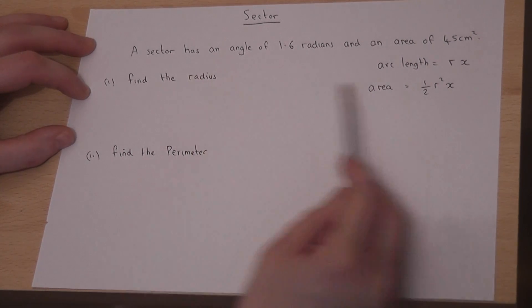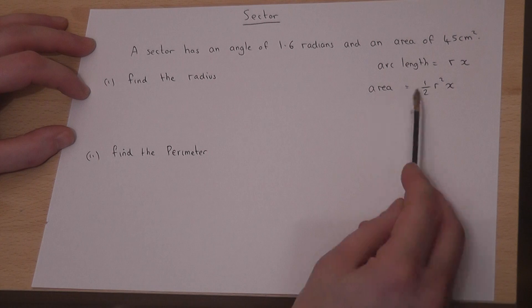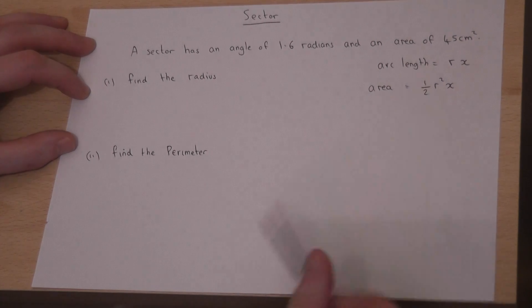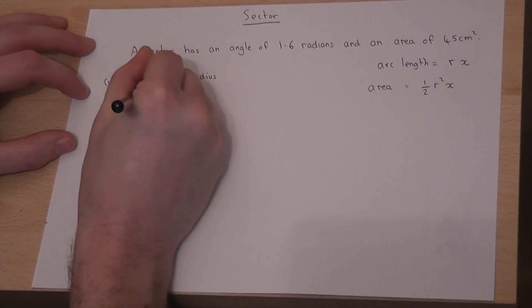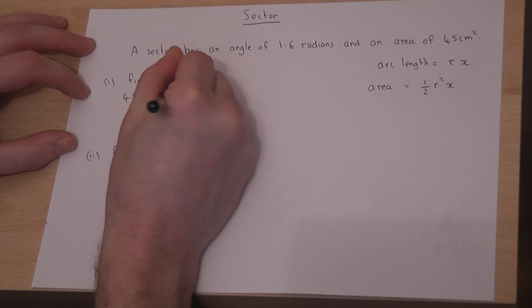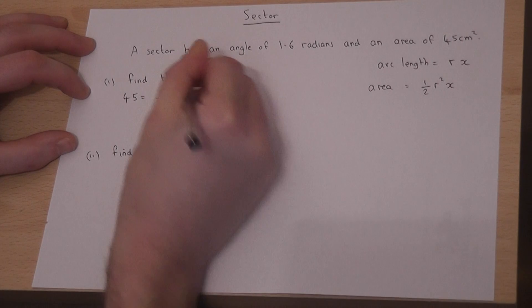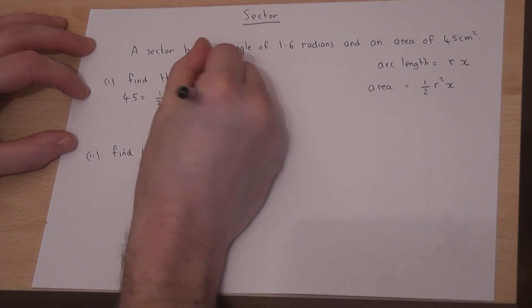We can use the area formula to deduce what r equals. We know the area is 45, so 45 equals half times r squared times x, which is 1.6.